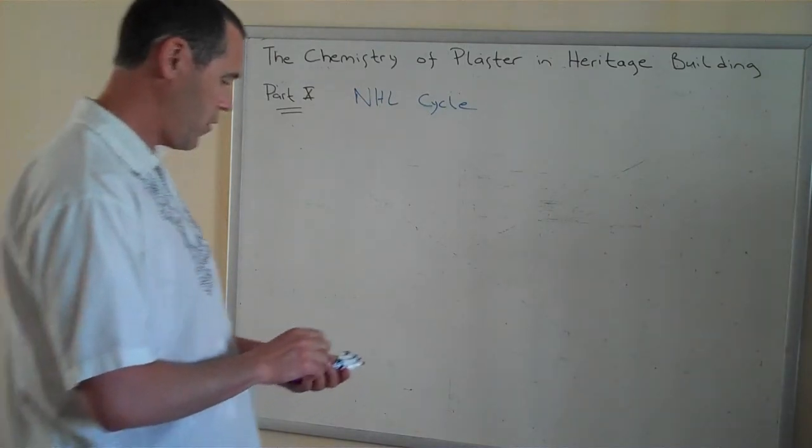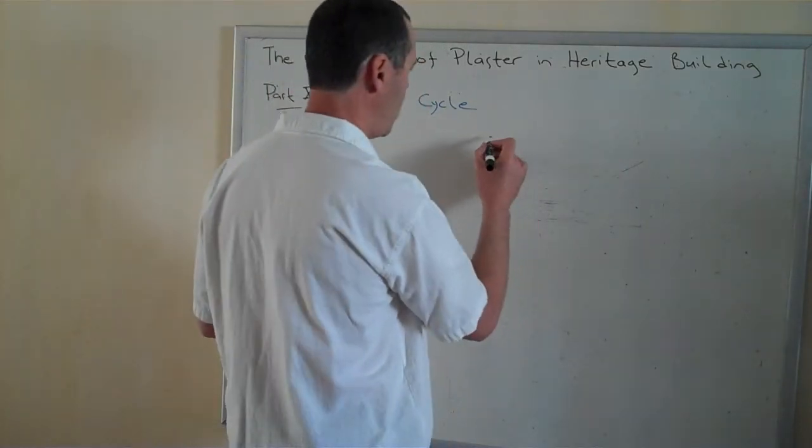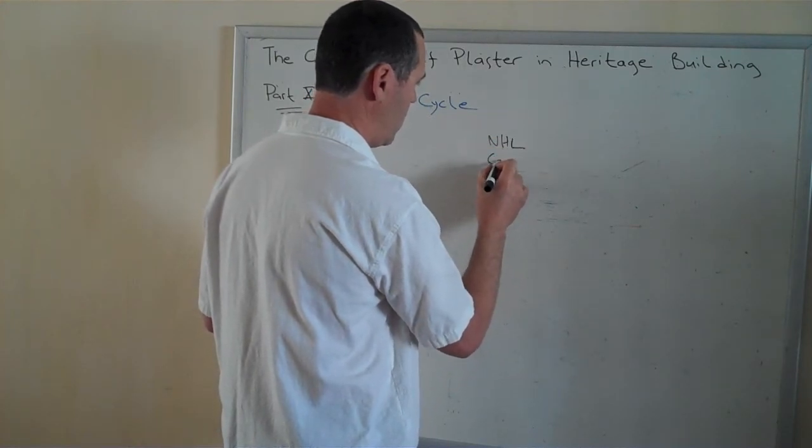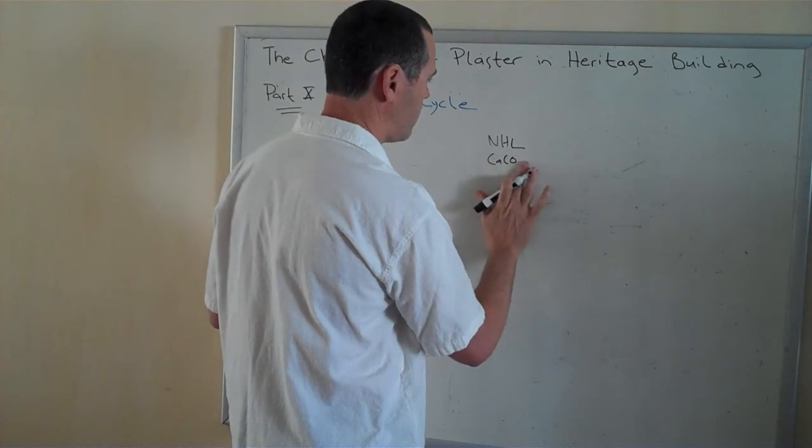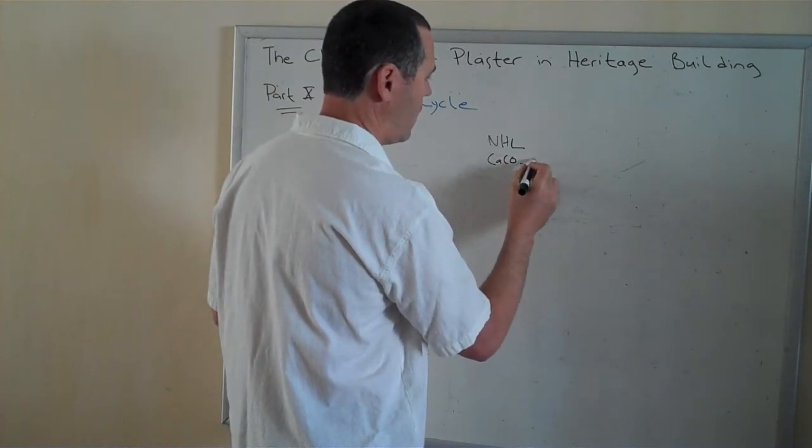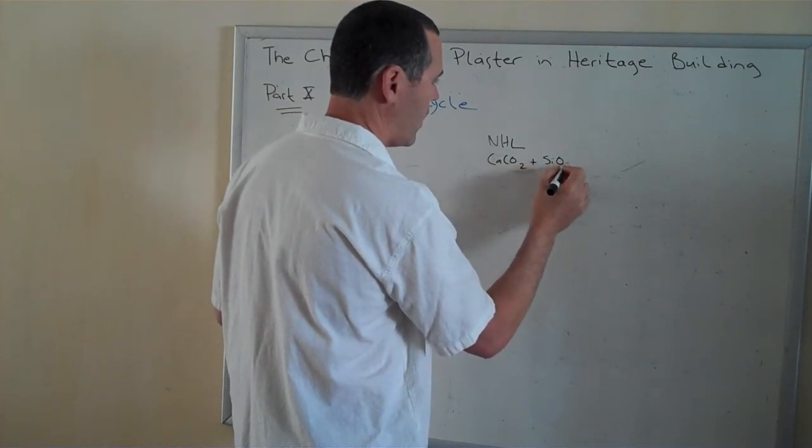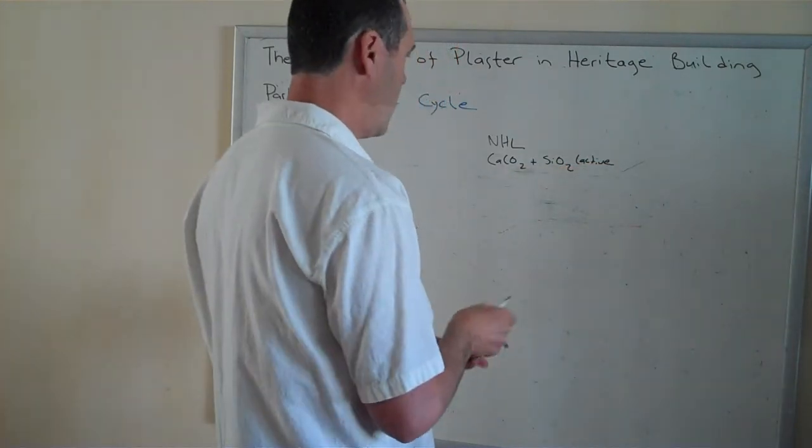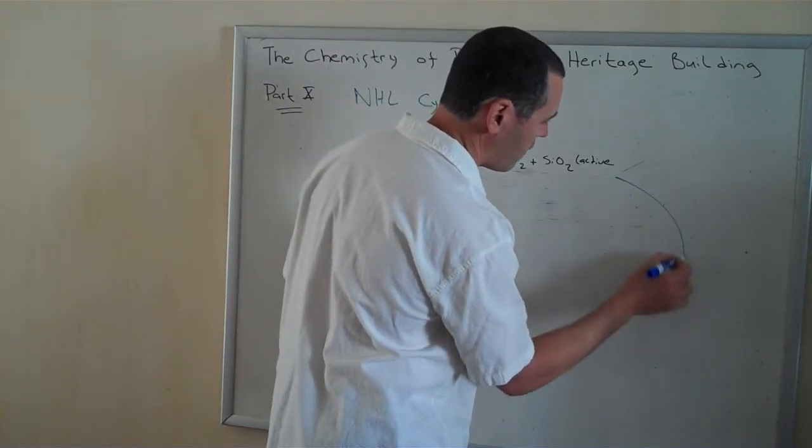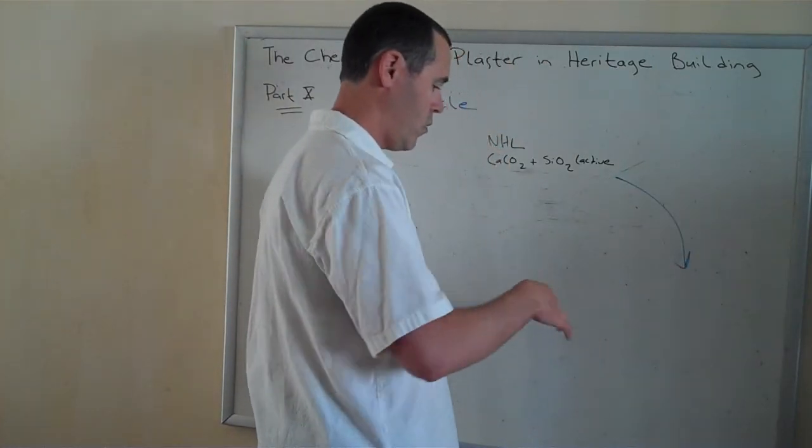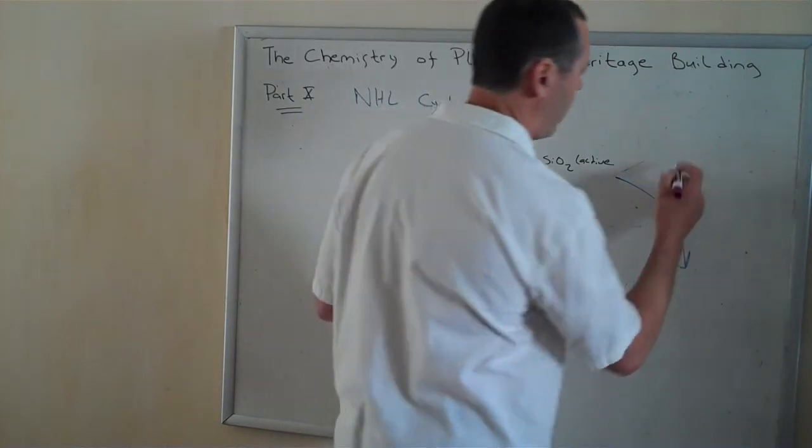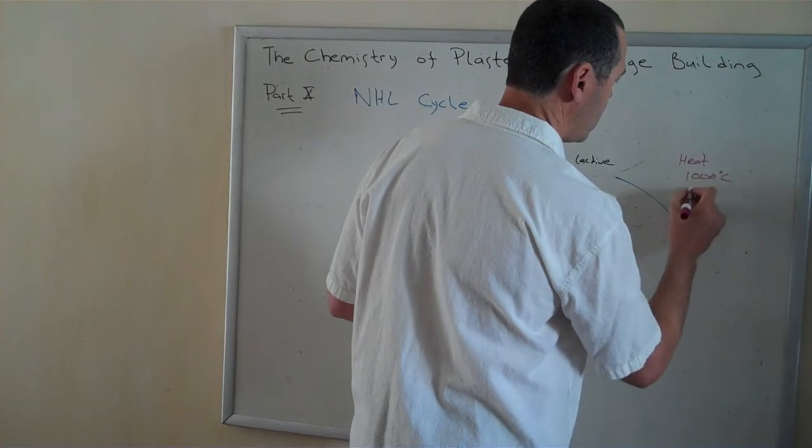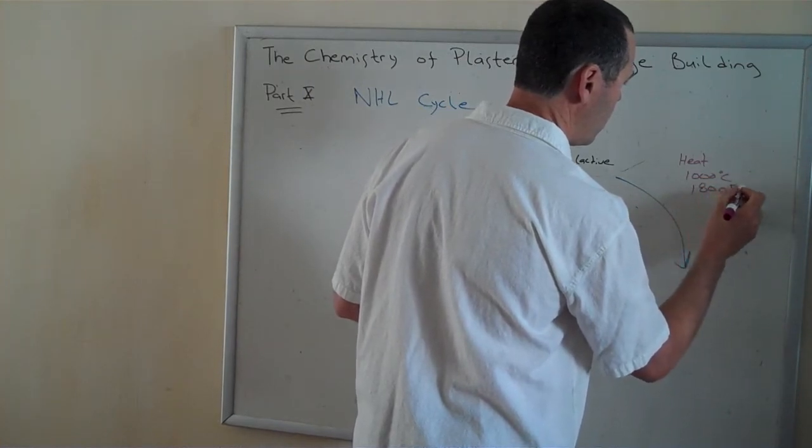So we start off with our NHL, which we discussed was a combination of calcium carbonate and silicon dioxide, an active or open one. As usual, in our process of manufacturing, we add heat in the form of a thousand degrees Celsius, about 800 degrees Fahrenheit.